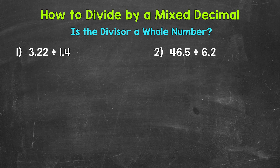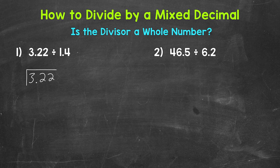Let's jump into number 1 where we have 3 and 22 hundredths divided by 1 and 4 tenths. The first thing we need to do is set this problem up so we can go through the division process. 3 and 22 hundredths is the dividend, the number we are dividing — it goes under the division bar. 1 and 4 tenths is the divisor, the number we are dividing by — it goes on the outside of the division bar.